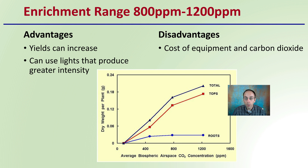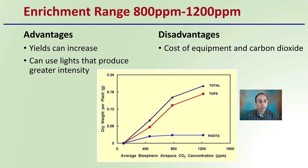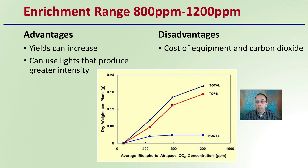What about 800 to 1200 parts per million? If a little is good, why don't we just go a little bit more? The advantage is this can still increase yields, and it can use lights that produce a greater intensity to take advantage of this increased carbon level. The disadvantage is the cost of the equipment and the actual carbon dioxide — however you're going to be using or producing it — as higher levels require more and more carbon dioxide to be added to your growing area.